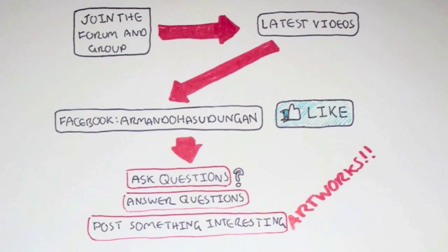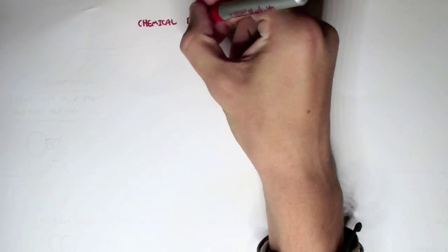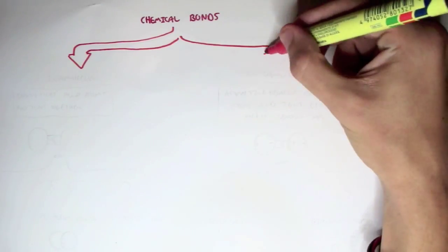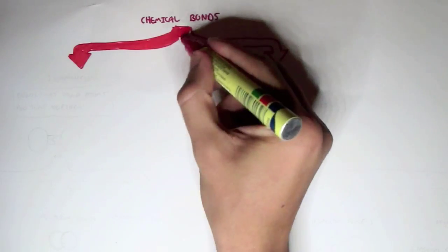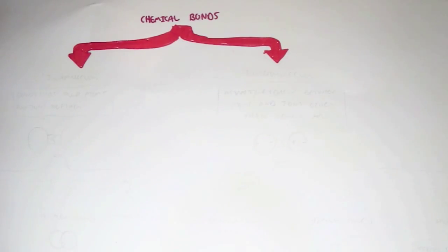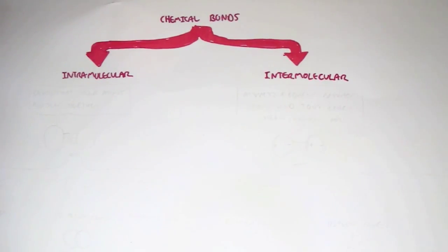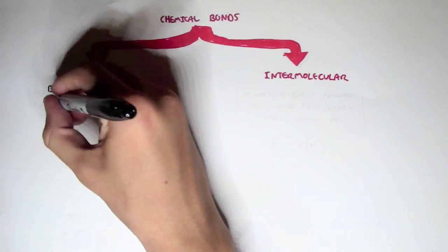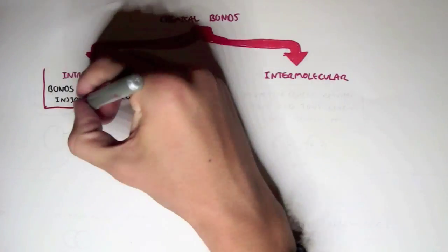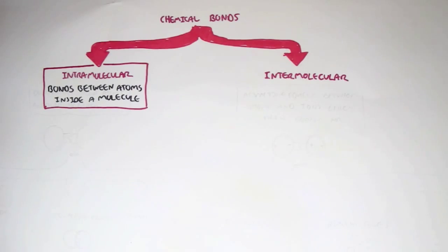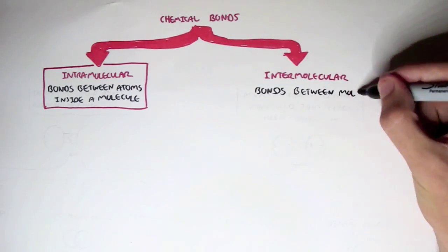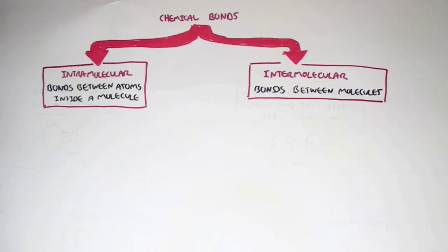In this video we're looking at chemical bonds and the different types. There are two main types: intramolecular bonds and intermolecular bonds. Intramolecular bonds are essentially bonds between atoms inside a molecule, whereas intermolecular bonds are bonds between molecules.